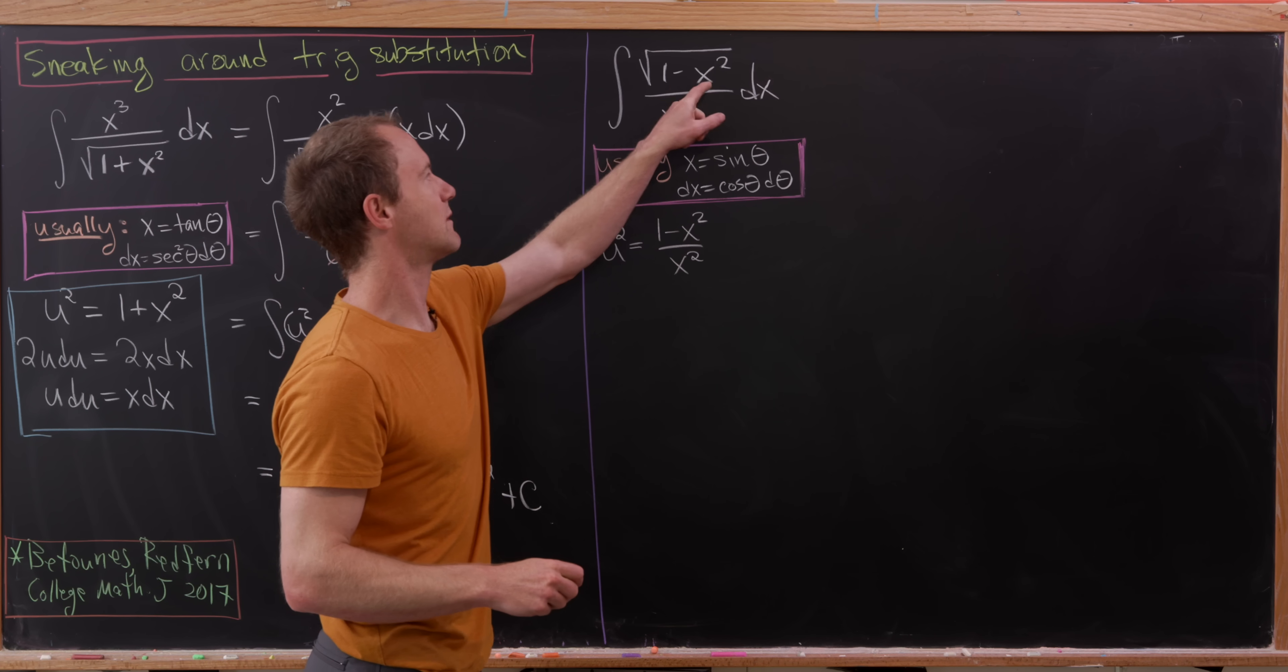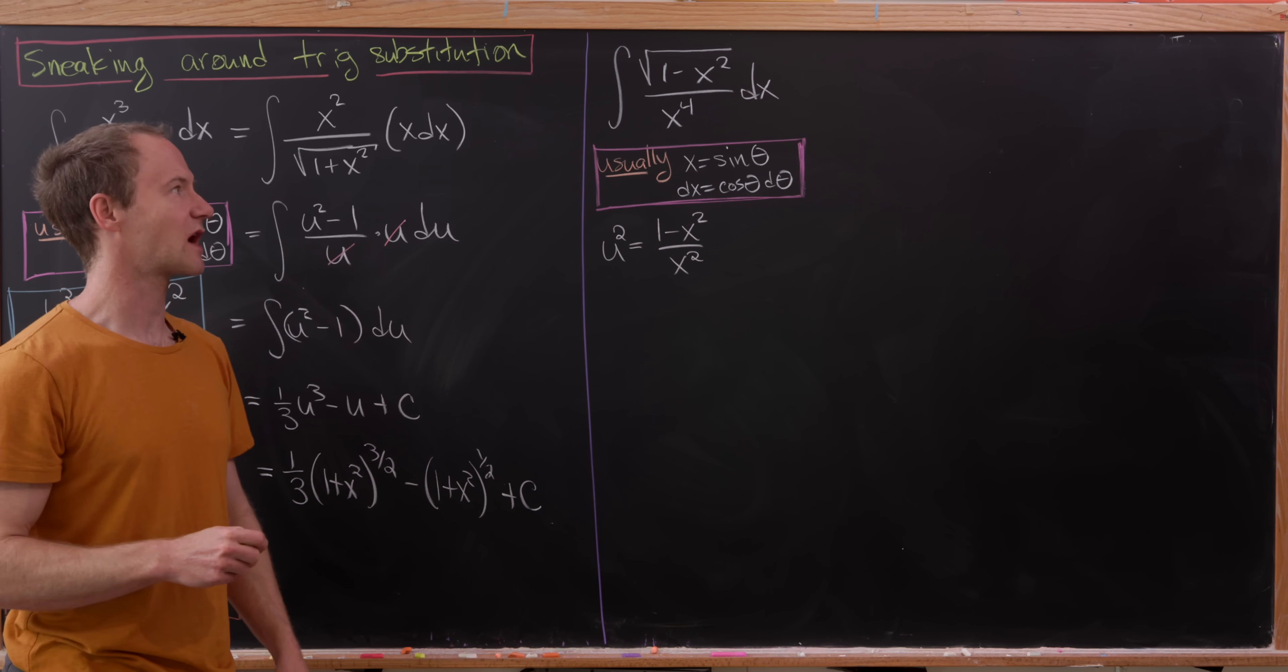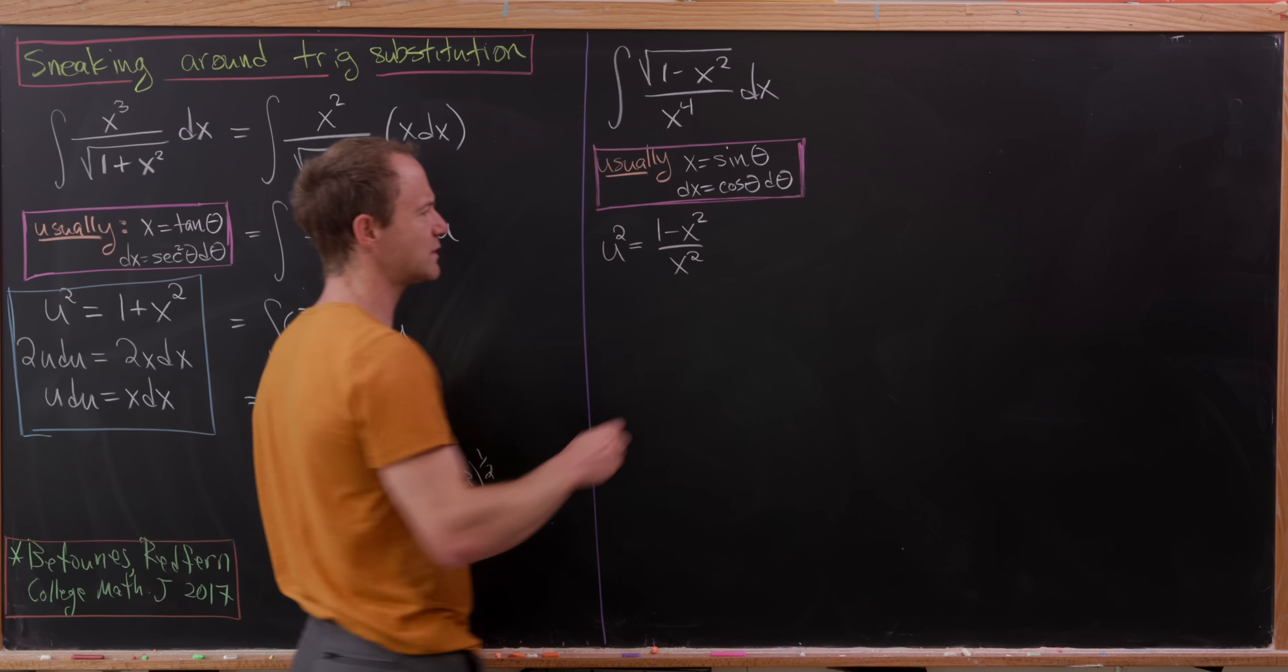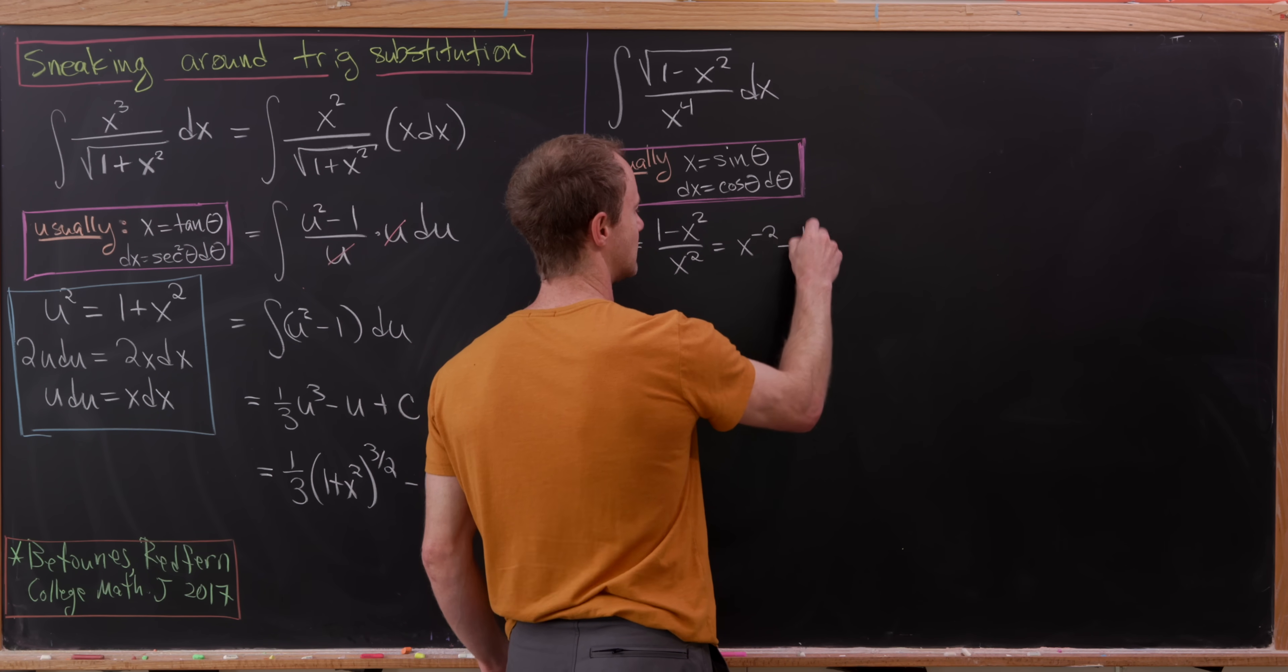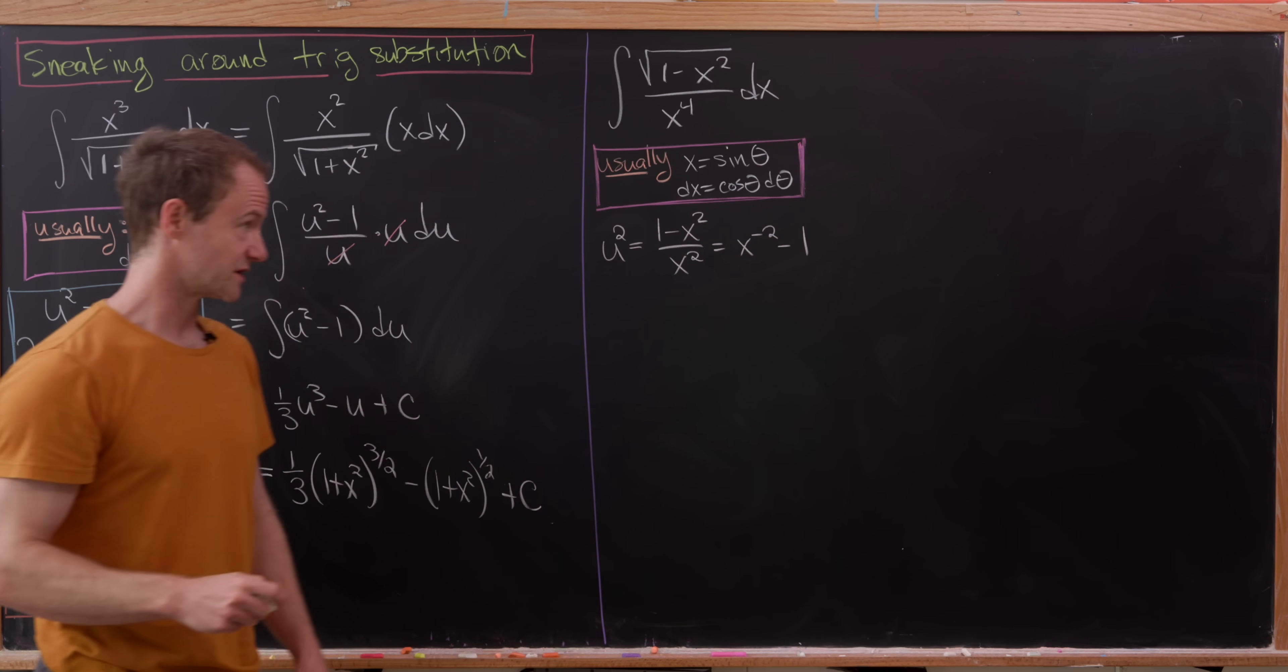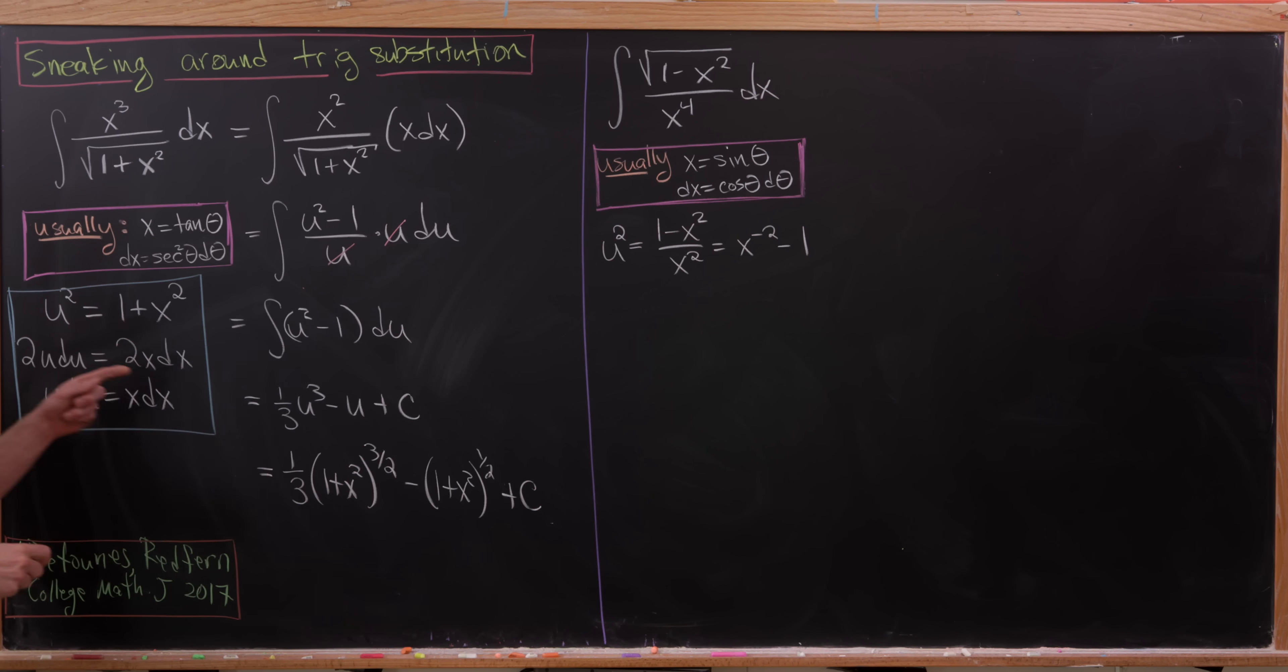So it's really like this, 1 minus x squared, this thing inside of the radical, but we bring another copy of x squared into the denominator. So, now where could we go from here? Well, perhaps we would want to write this as x to the minus 2 minus 1 to aid ourselves when we take the derivative of both sides to find out the du component like we did over here.